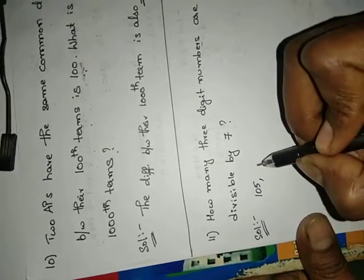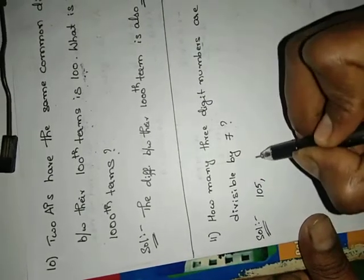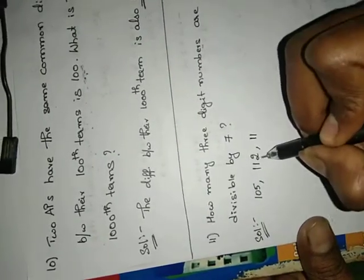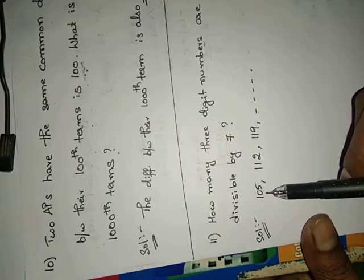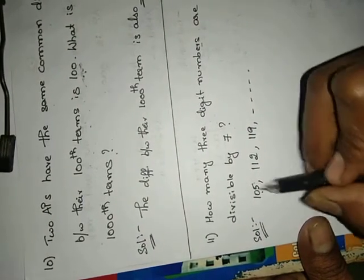For continuation, the next numbers add 7 each time. 105 plus 7 = 112. Again add 7 = 119. So like this the series continues. The series goes up to what last number? The last three-digit number is 999.